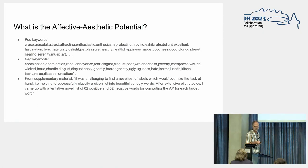When you look at the negative words, again there are some clearly valence-related, but also some things that are more things we probably dislike such as disease. There's also unculture. So the idea is that positive and negative is also associated with culture and without culture. About the choice of these words, Jacobs writes in his appendix that it was challenging to find a novel set of labels which would optimize the task at hand. After extensive pilot studies, I came up with a tentative list of 62 positive and 62 negative words for computing the aesthetic potential for each target word.